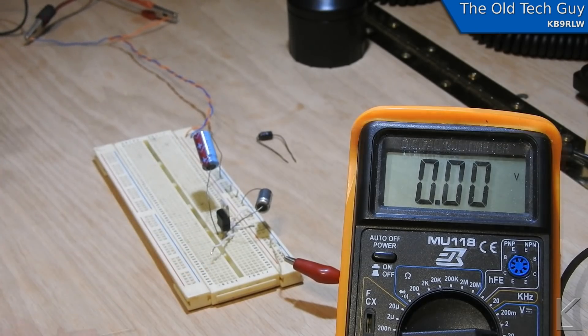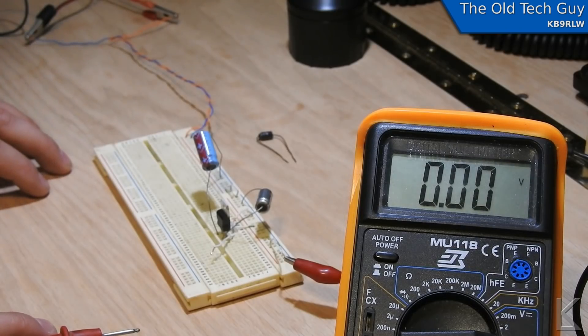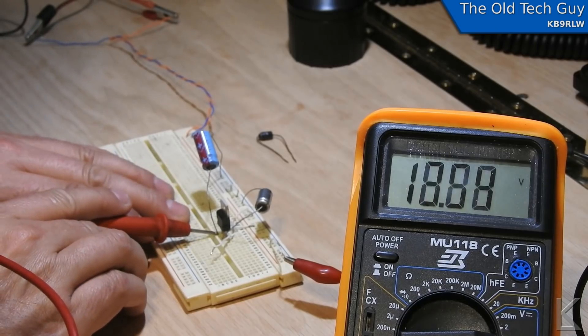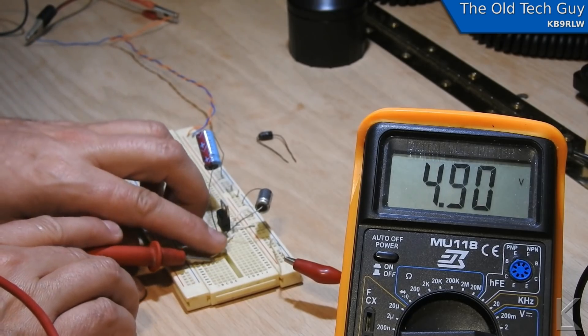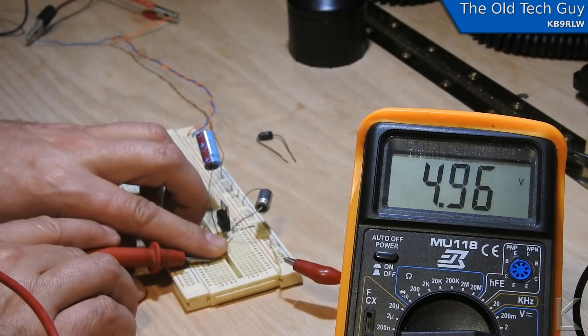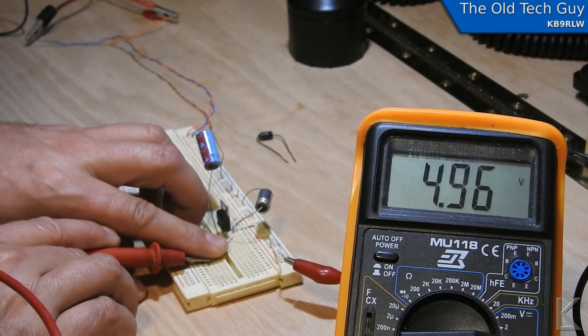So I'm going to power it up. And what we're going to do is we're going to measure the output. So here's the input pin here. 13.57 volts. And here's the output. 4.96. They're usually a little bit low. And that's my problem on my regulator.